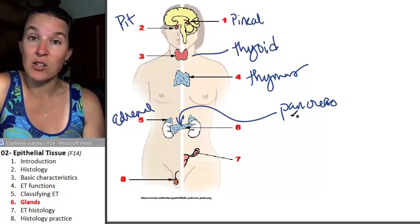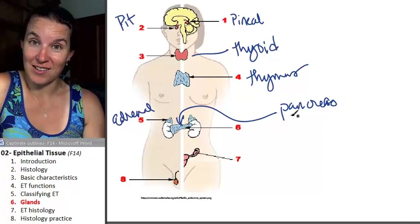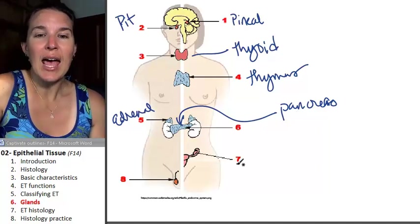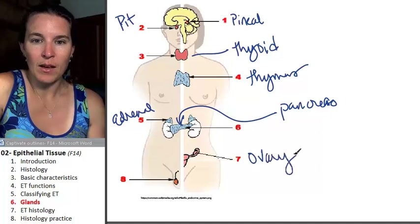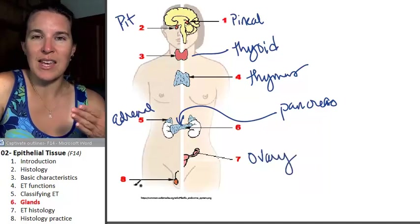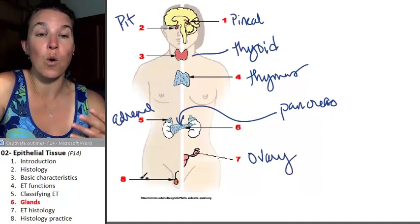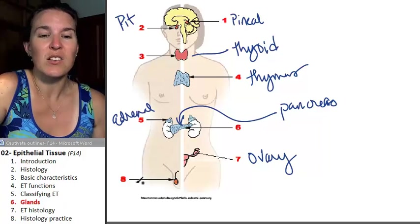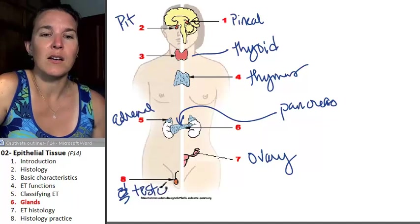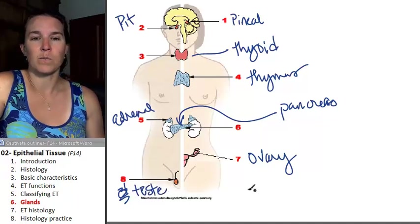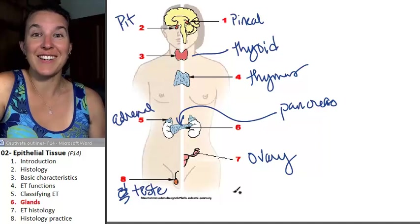The pancreas has endocrine and exocrine glandular tissue in it. And then look at my cute little ovary. These guys all play a role in the endocrine system, producing hormones that are dumped into the blood. So they don't need ducts. These are your testes. It's not a duct down there. It's your testy.